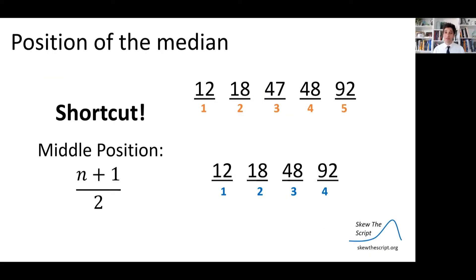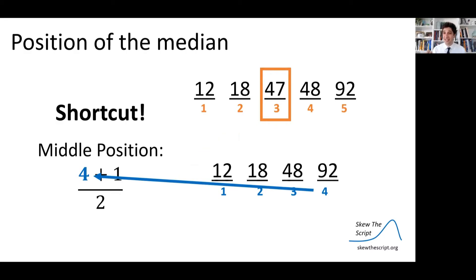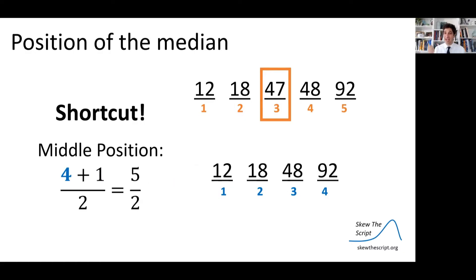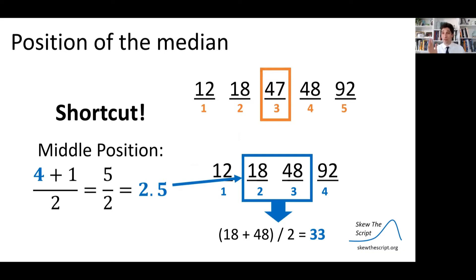A shortcut for large data sets: to find the middle position, take the number of data values, add one, then divide by two. For five data values: (5+1)/2 = 3, so the third value — 47 — is the median. For four data values: (4+1)/2 = 2.5, which signals the middle position is halfway between the second and third values. That's a helpful trick so you don't have to cross off values one by one for large data sets.